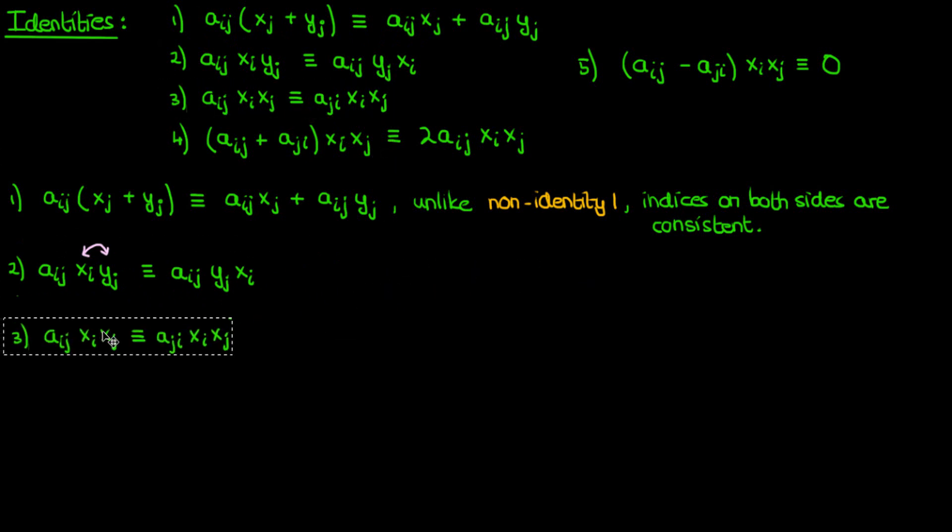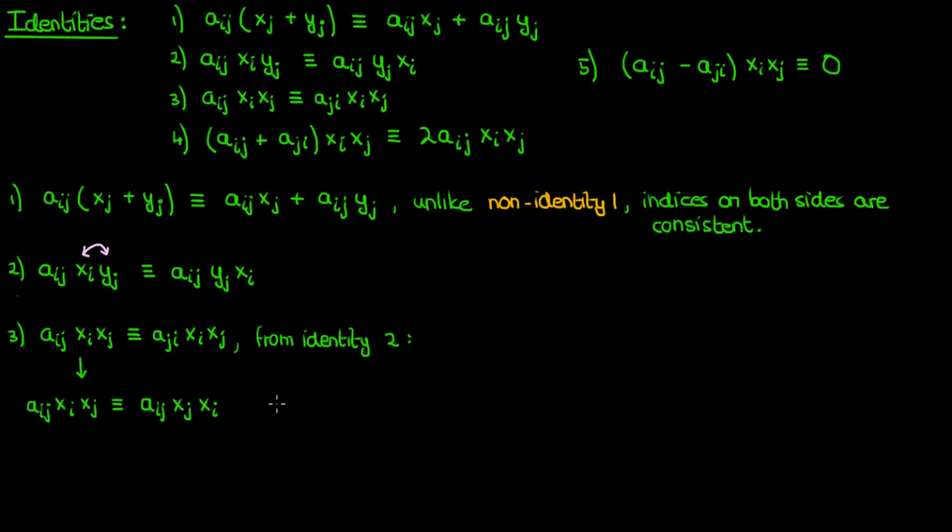But what about the third identity? Let's look at the left hand side first. From identity number two, we can change the left hand side to aij times xj times xi, and this is pretty much the exact same as the right hand side of the identity, except the indices i and j are switched. But that doesn't really matter since i and j are both dummy indices, and as we mentioned in the previous video, you can switch the letters representing dummy indices without too much hassle.